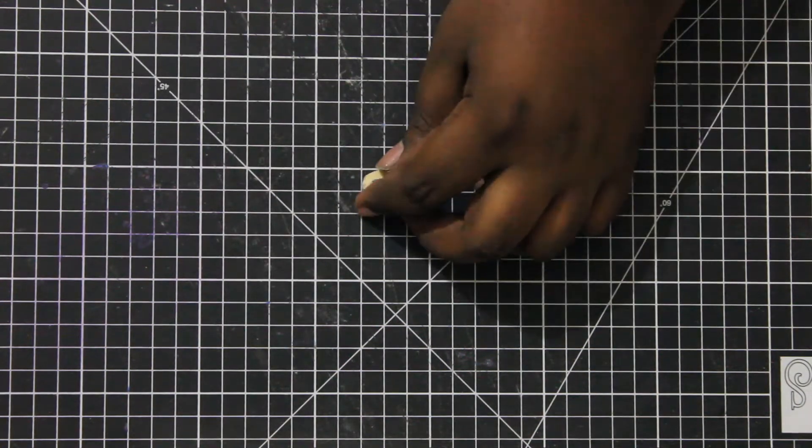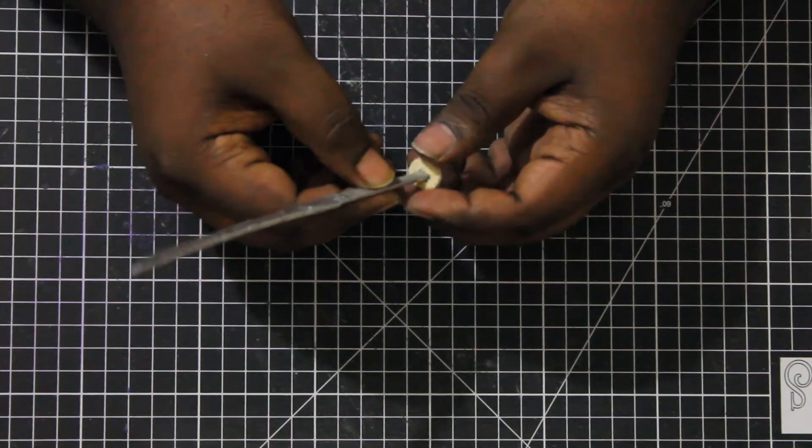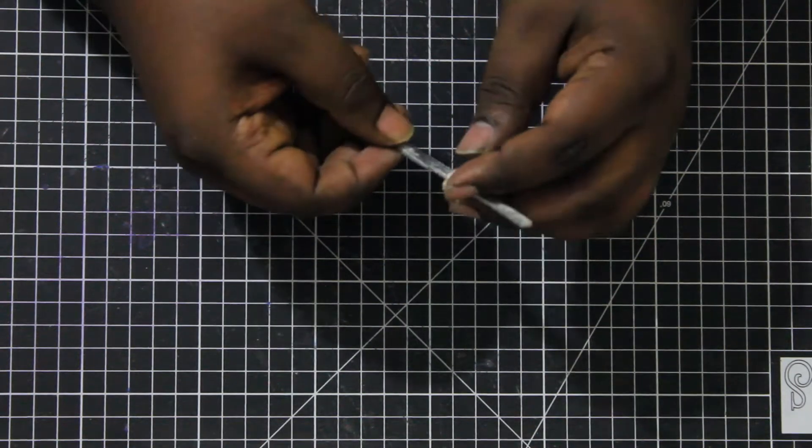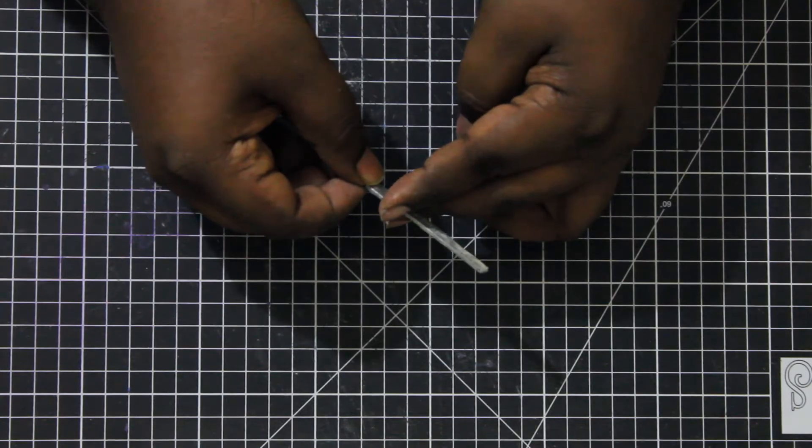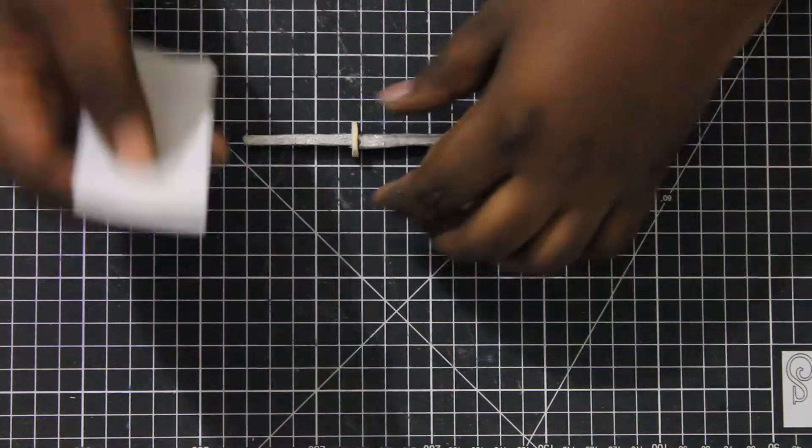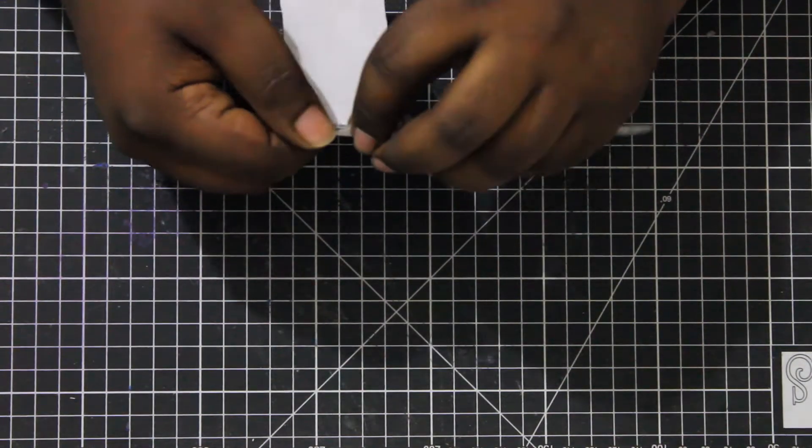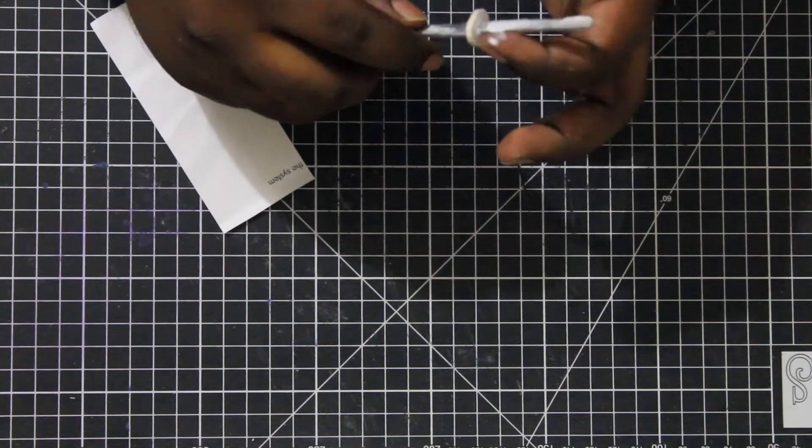Now put the guard back so that we can make the handle. Take a strip of paper and start wrapping the handle. However this time glue it to the wood so that it won't slide out.